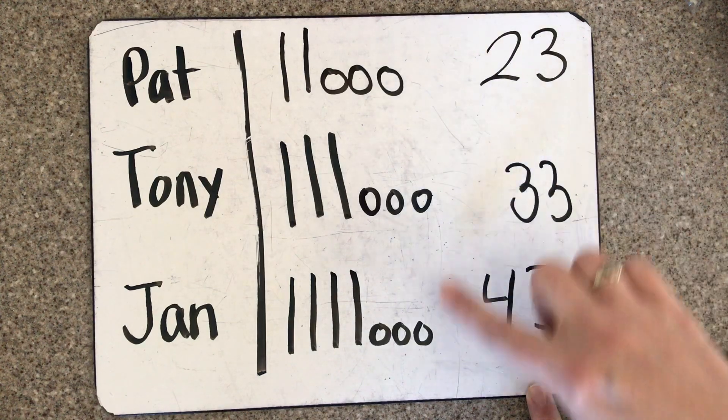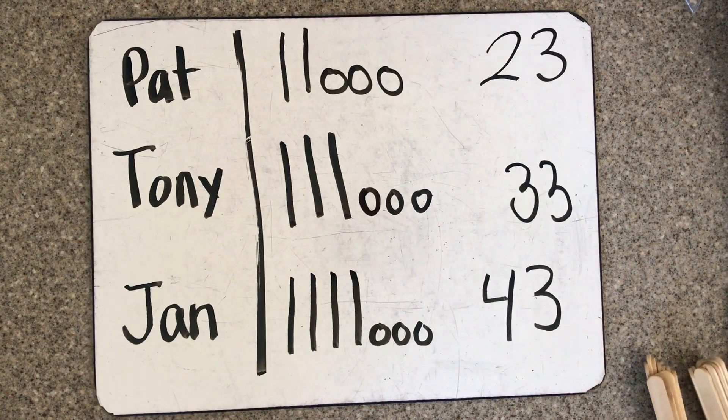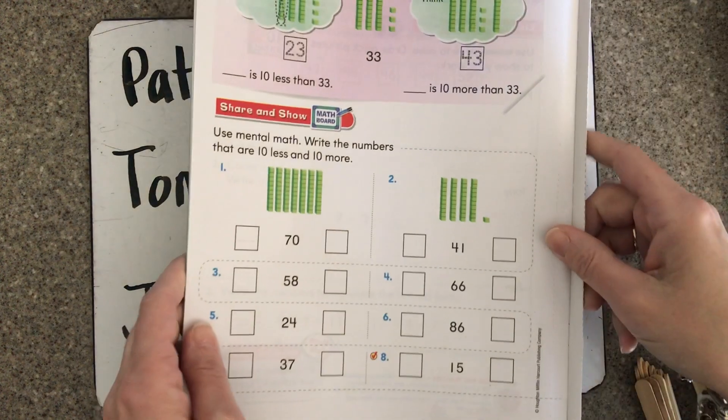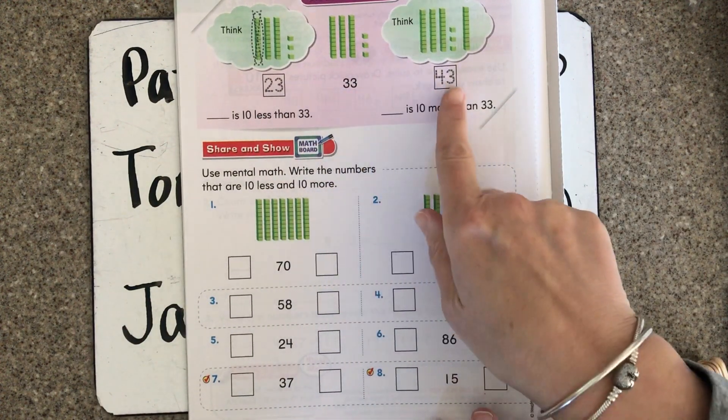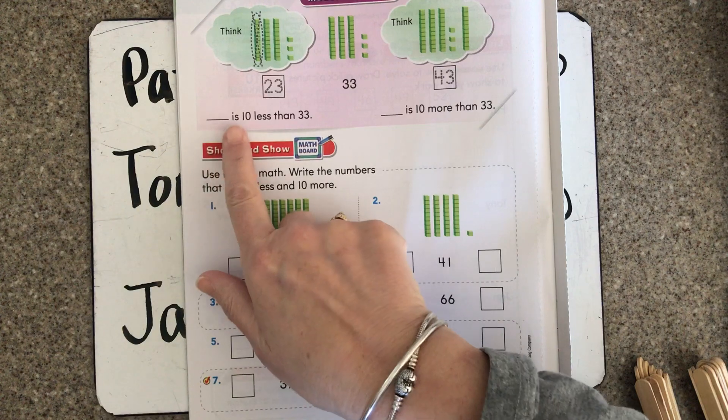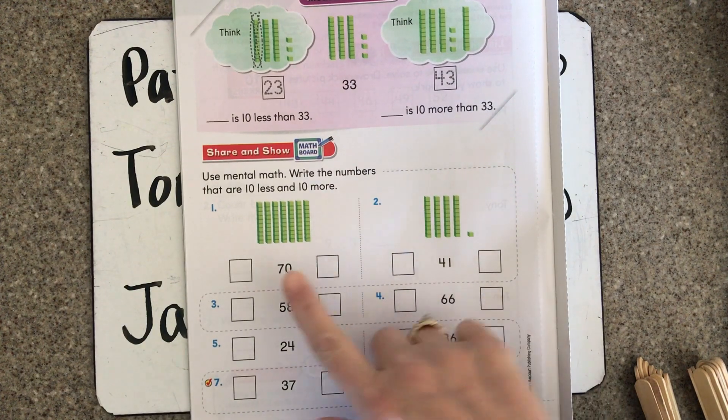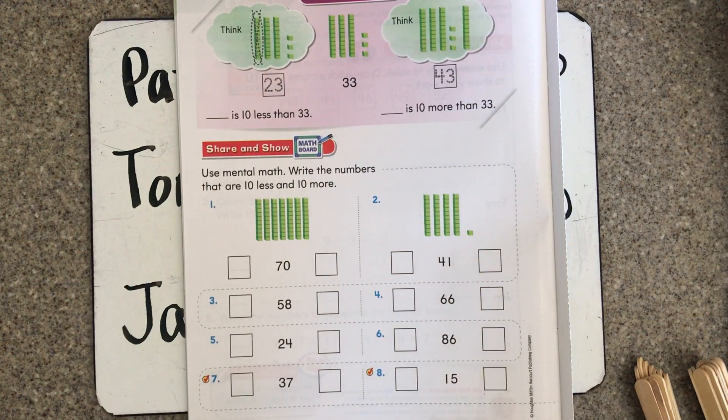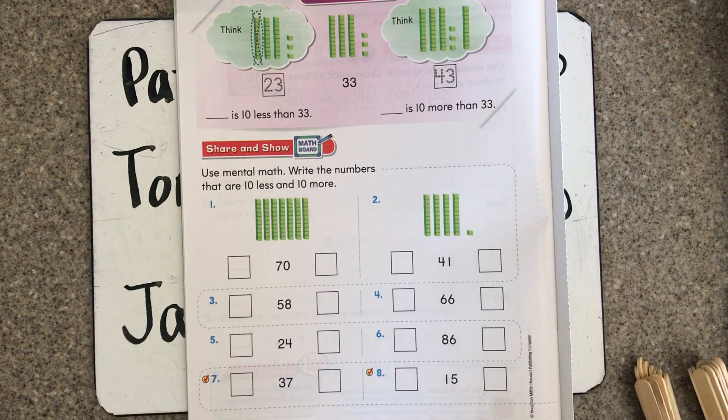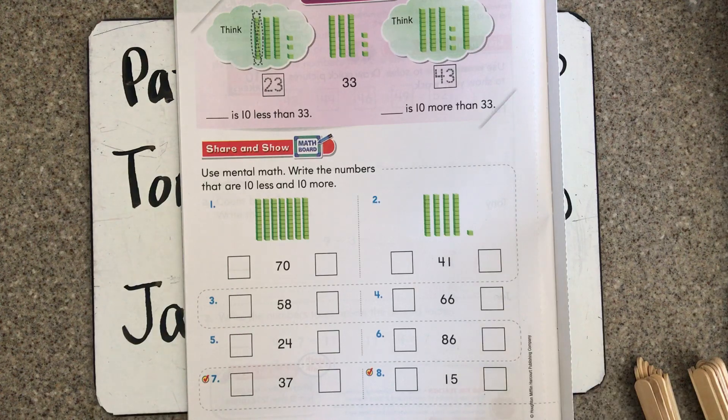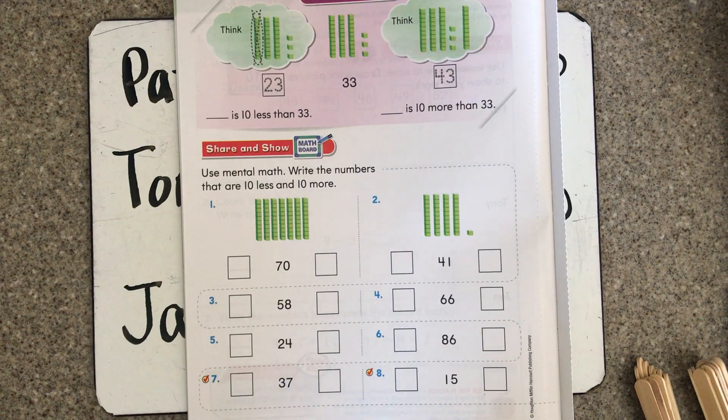That's going to be your work today. On your slide you're going to see this page, and here's the example we just did: 23, 33, 43. So 23 is 10 less than 33, 43 is 10 more. You're going to be doing that with these examples down here, and you can draw your ten sticks and ones if that helps you. They've given you two to try using the ten sticks that you'll see in second grade, but you can always do the little sketches to help you out. That's your work for today. Have fun with math!